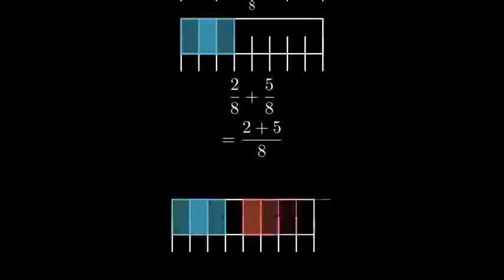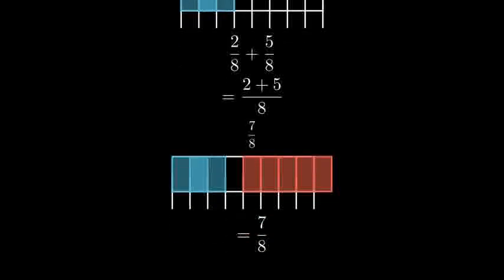Let's see what this looks like visually. Here's two-eighths plus five-eighths. When we combine them, we get seven-eighths.